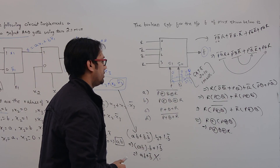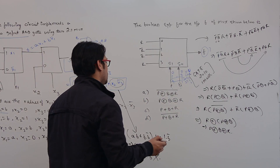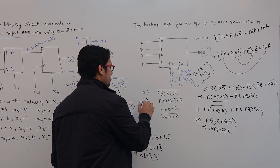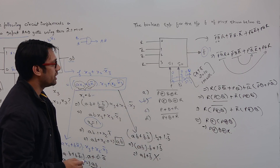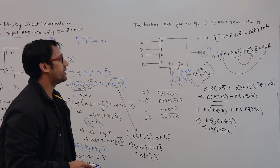So option B, which is P XOR Q XOR R, is the correct answer for this question. This question is very simple and straightforward.